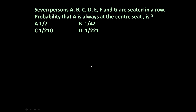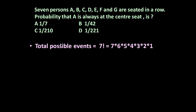To answer this question, first let us determine the total possible events — meaning 7 persons can be seated in how many different ways in a row. That is equal to factorial 7, which means 7 × 6 × 5 × 4 × 3 × 2 × 1.